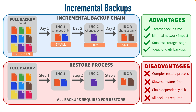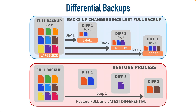There is a middle ground between a full backup and an incremental backup, and that's called a differential backup. A differential backup backs up any change made since the last full backup — not since the last incremental or differential backup. So in an example where we do a full backup on Monday, differential backup one on Tuesday backs up what's changed since the full backup. Then on Wednesday, differential backup two backs up everything changed since the last full backup — regardless of what was backed up in differential one.